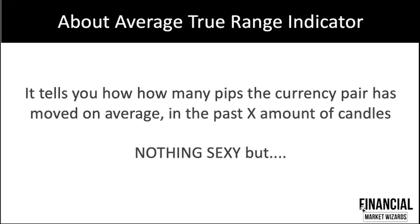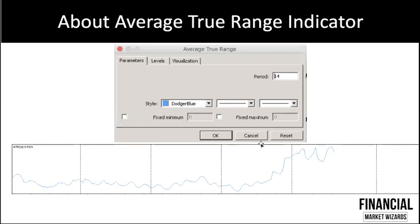The Average True Range indicator tells you how many pips a currency pair has moved on average over the past X candles. For example, the range from the lower tail to the upper tail of each candlestick — say 10 pips — is calculated for the last 14 candles, added together, and divided by the number of candles. The ATR is nothing sexy, but it is so important if you want to learn how to set the correct stop loss.